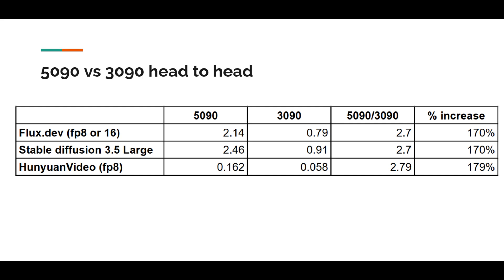We have completed all three comparisons. Here is a summary of the results. We tested three models: flux1.dev, Stable Diffusion 3.5 Large, and HuanYuan Video. All of them have a very large number of parameters and require lots of GPU computing. For the 5090, there is a very significant difference compared to the 3090 — a 170% increase for flux and Stable Diffusion, and an almost 180% increase for HuanYuan Video. If you use a GPU to run these models, you will definitely notice the difference, and it can help you iterate faster.